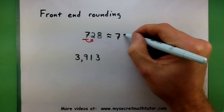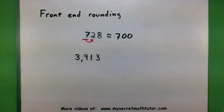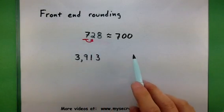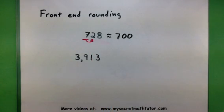The rest of the numbers, we will make a 0. So using front-end rounding, 728 is approximately 700. Just like that.